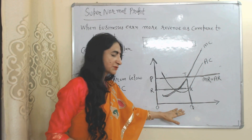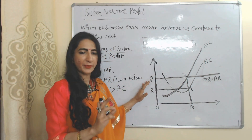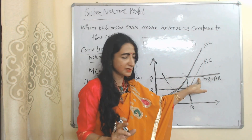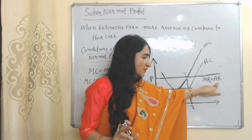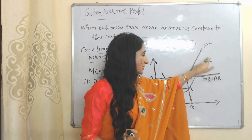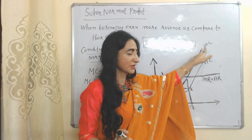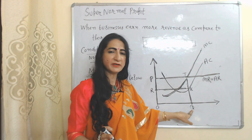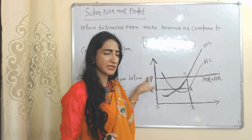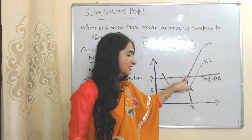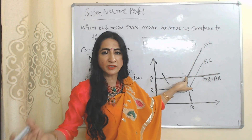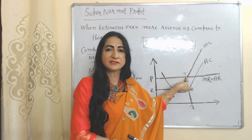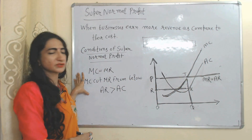Now we will see where the firm is receiving super normal profit with the help of this diagram. On the X-axis we have output; on the Y-axis we have price, revenue, and cost. This horizontal line represents marginal revenue as well as average revenue. This is the average cost curve, this is the marginal cost curve. T is our equilibrium point, OQ is our equilibrium output, OP is our equilibrium price. At this T point, the firm is receiving super normal profit.